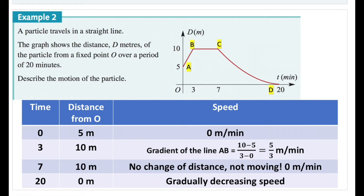Rate of change doesn't just exist in the water bottle example — it is in fact everywhere around us. In this question we're observing the relationship between time in minutes and distance measured in meters. A particle travels in a straight line. The graph shows the distance d meters of the particle from a fixed point O over a period of 20 minutes. I've labeled different points on the graph: starting point a, then b, c, and d. The graph starts at (0, 5), meaning when time is zero, the distance from origin is five meters.